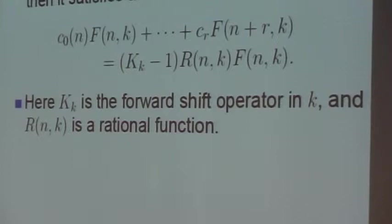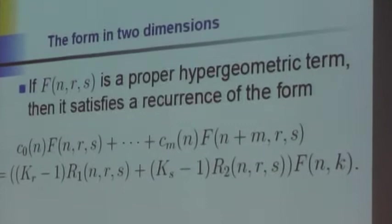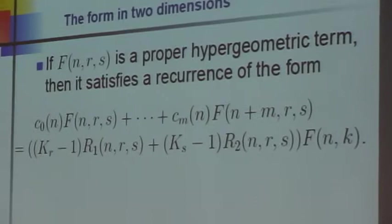So the theorem is: for every proper hypergeometric term—and I won't say exactly what that is, please see AeqB—satisfies a recurrence. Everyone satisfies such a recurrence. Now let's go to two dimensions, which is where we're going to live for this particular problem.